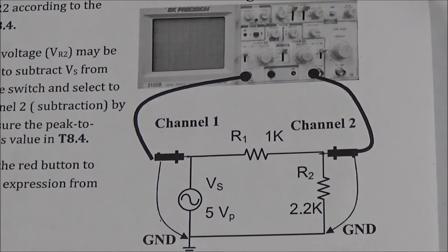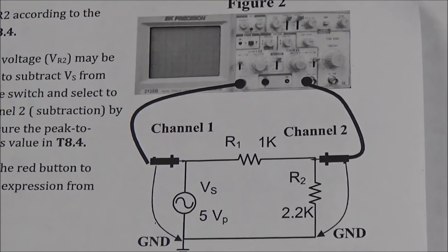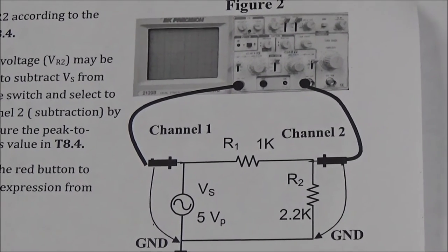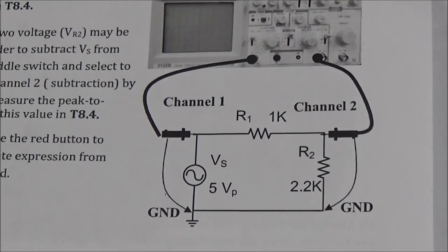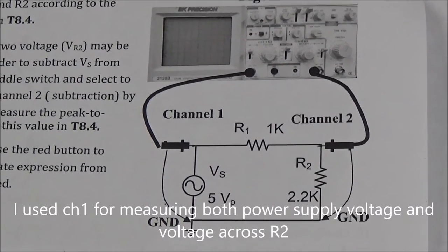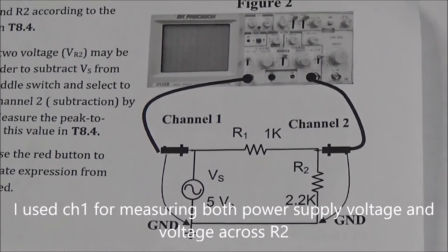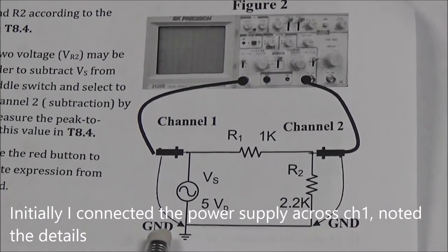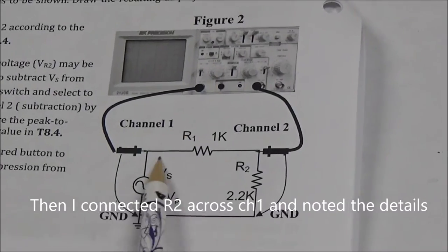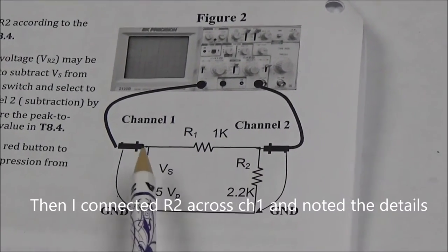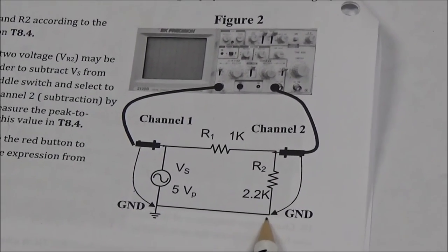I'm going to hook up this circuit now. A cathode ray oscilloscope has a limitation — it can only measure voltages across grounded components. The power supply has a ground, so I'll connect channel 1 across the power supply and channel 2 across resistor R2, since the other end of R2 is connected to ground. The voltage across R1 equals the supply voltage minus the voltage across R2.